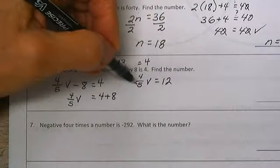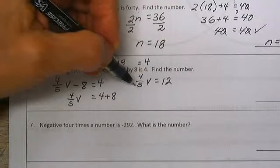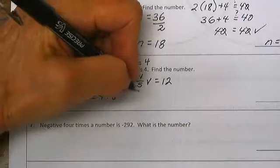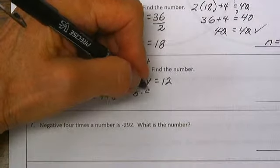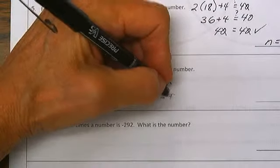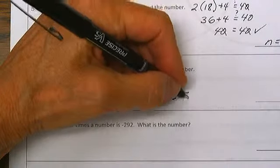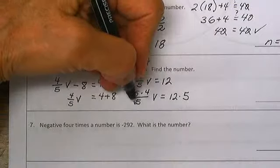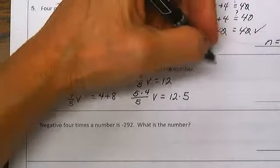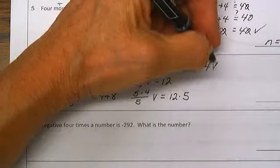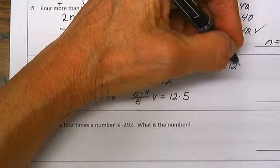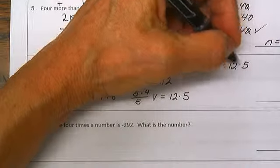Next, I do not like this denominator. How can I get rid of it? Multiply by 5. 5 times 4 divided by 5 times V equals 12 times 5. So we have 4 times V is equal to 60.